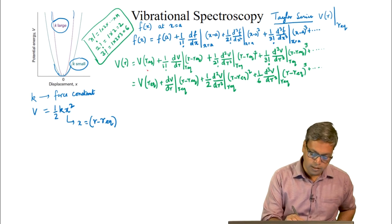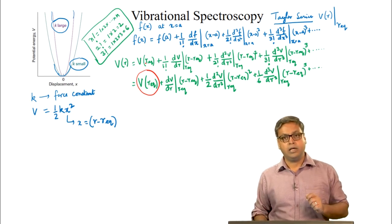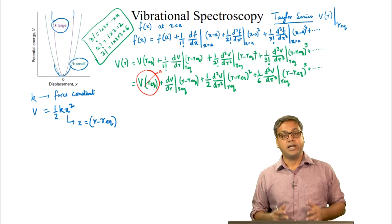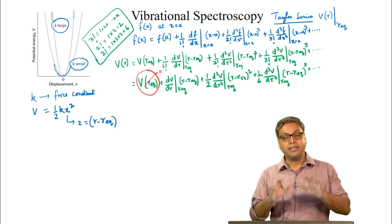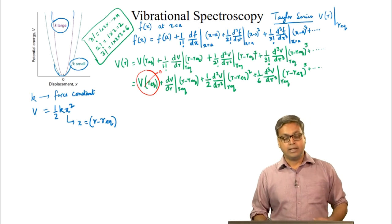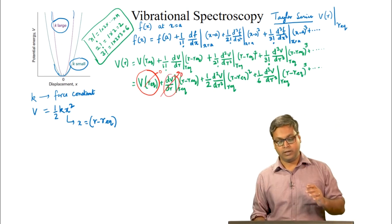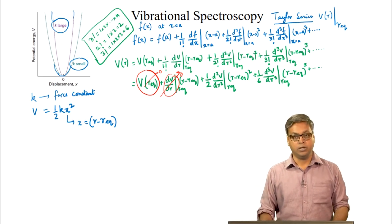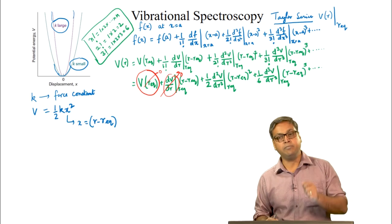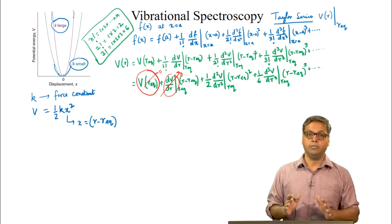The first term is a constant — the electronic energy at the equilibrium geometry — and can be arbitrarily set to 0. In spectroscopy we are more interested in the difference between energy levels than the actual energy. The second term is 0 because the first derivative at r-equilibrium is 0, since the potential is at a minimum there.